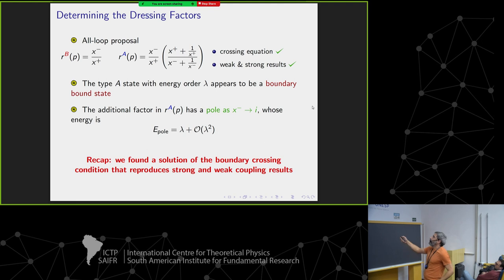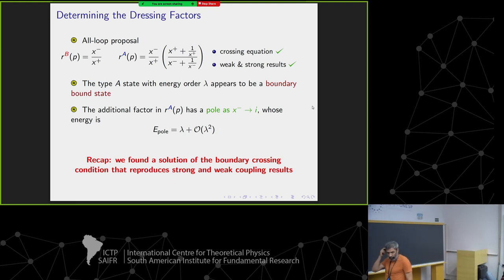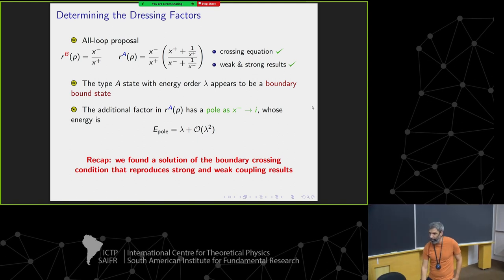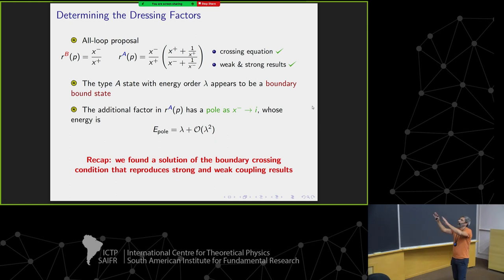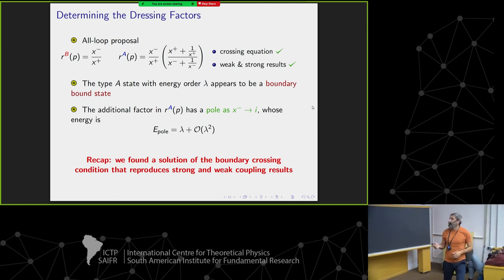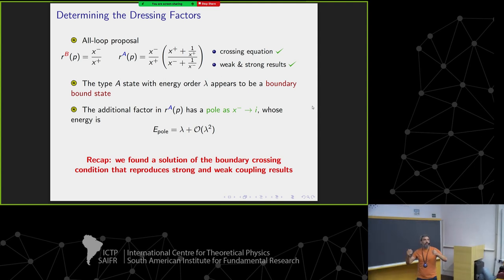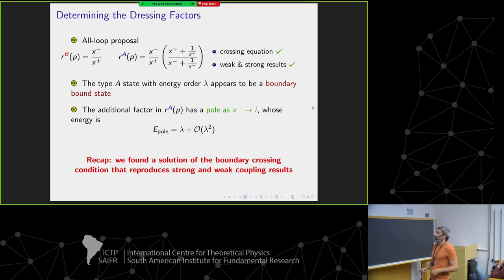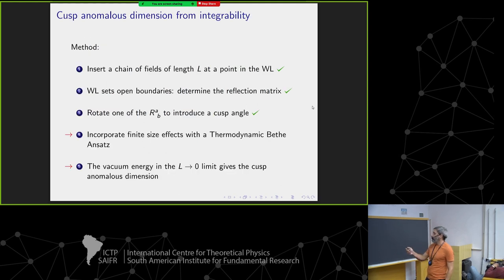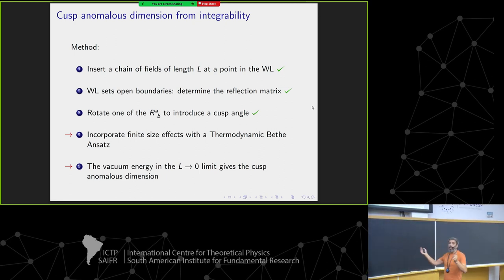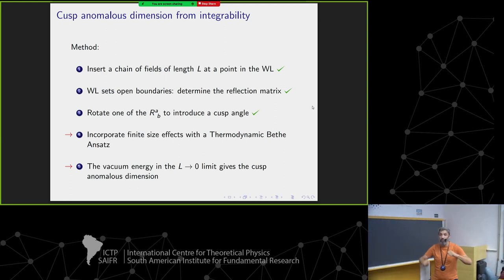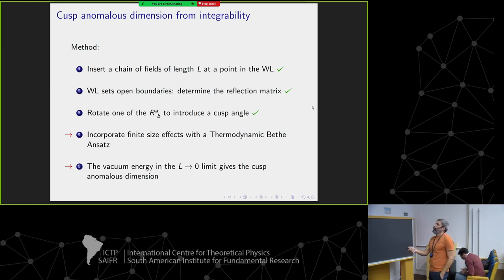The most important part of our recent work was that the correct weak coupling picture allowed us to pin down the boundary dressing factors. We have a solution satisfying all requirements. Now that we know exactly the bulk S-matrix and the reflection matrix, we can use this information to solve exactly for the spectrum of excitations of insertions in the Wilson loop. We have to develop a method to incorporate finite size effects for the spectrum of anomalous dimensions of this Wilson loop with insertions — these open spin chains — and eventually compute the vacuum energy and take the limit in which the size of the insertion goes to zero.